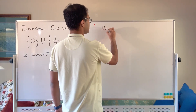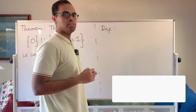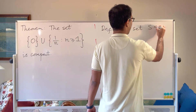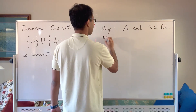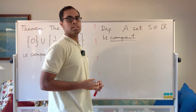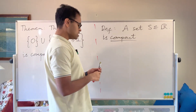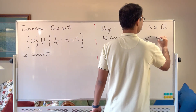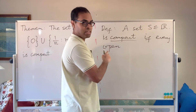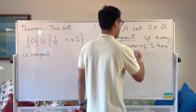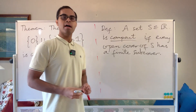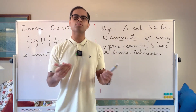We say that a set S contained in R is compact if the following condition is satisfied: every open cover of S has a finite subcover. I'm going to explain what that means. This video is powerful because you're just going to understand all these advanced concepts in one quick video. So what is an open cover? What does that mean?